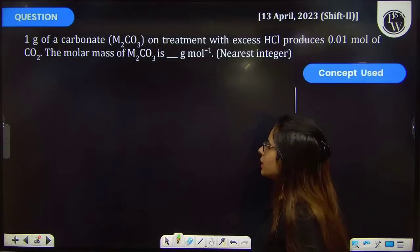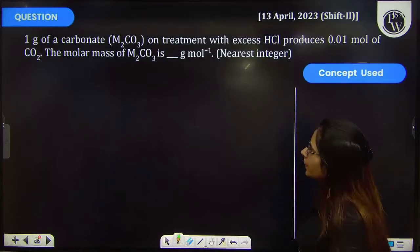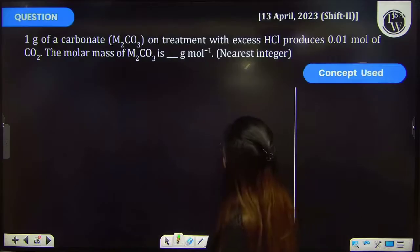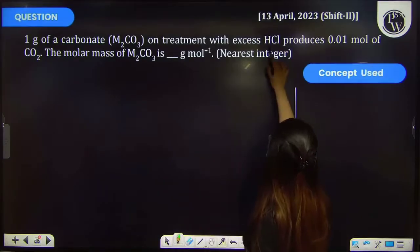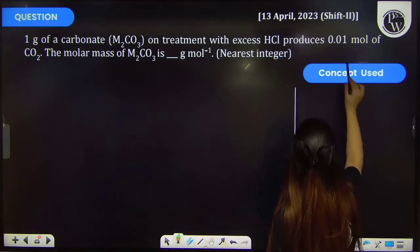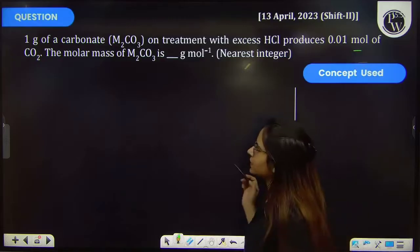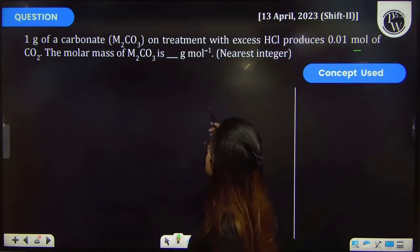Let's see this previous year question. The question says that 1 gram of a carbonate M₂CO₃ on treatment with excess HCl produces 0.01 mol of carbon dioxide. So the molar mass of M₂CO₃ is?